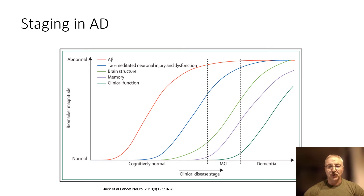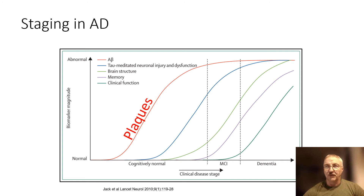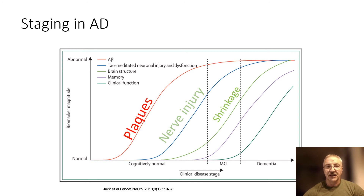Here I want to introduce the now well-established idea of staging of Alzheimer's disease. This model suggests that as we go from cognitively normal to mild cognitive impairment to true dementia, different changes are happening at different stages. We see amyloid distribution early on forming neurofibrillary tangles and plaques, tau-mediated neuronal injury and dysfunction as part of the amyloid cascade hypothesis, neuronal and synaptic loss, and therefore brain structure loss. Early on we see reduced memory, and later reduced activities of daily living.